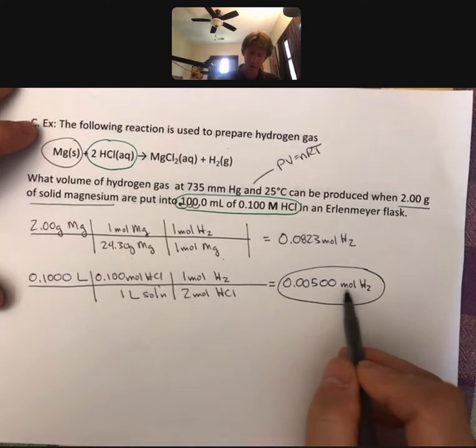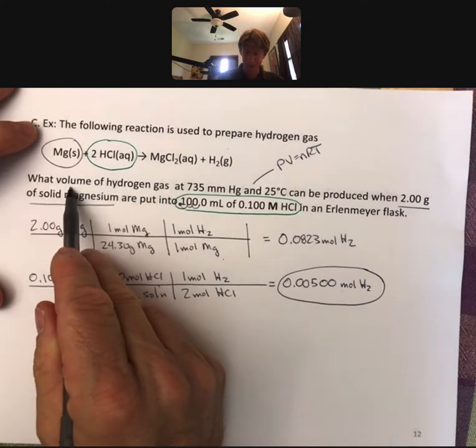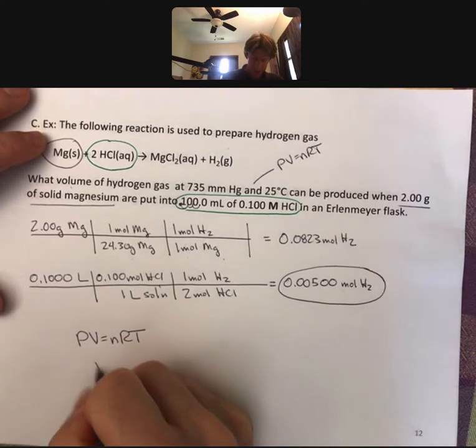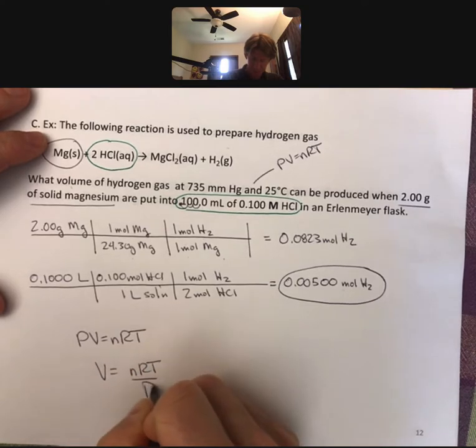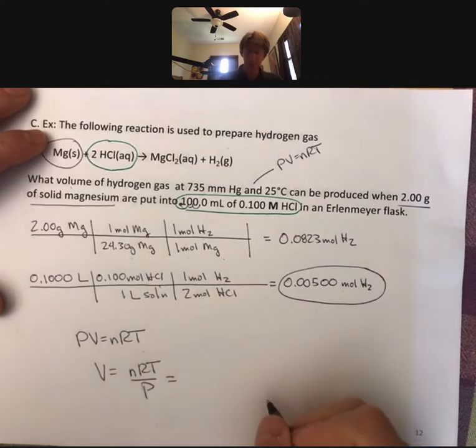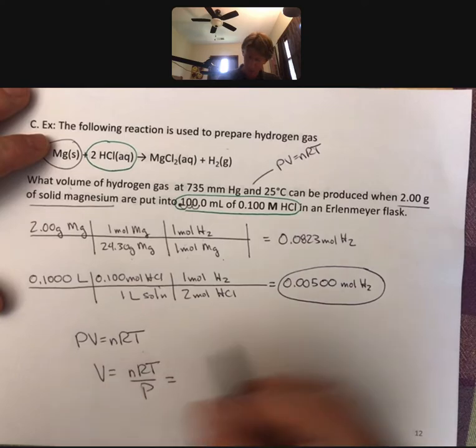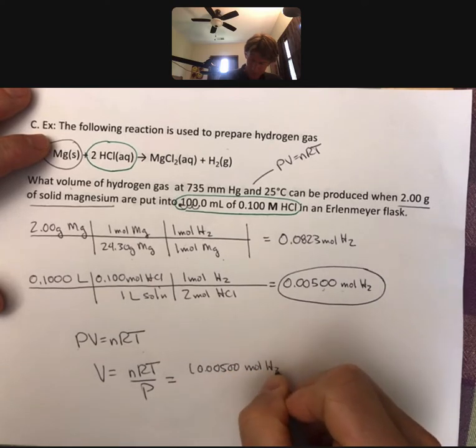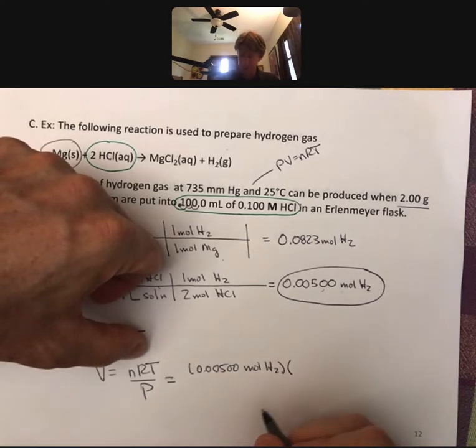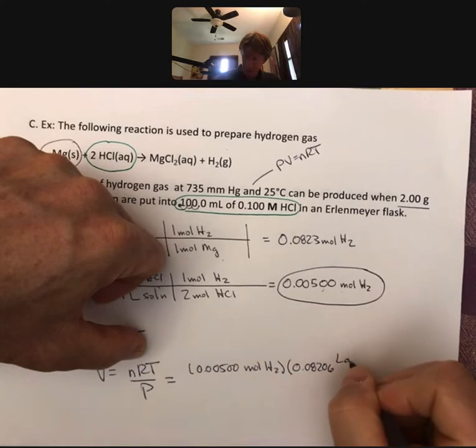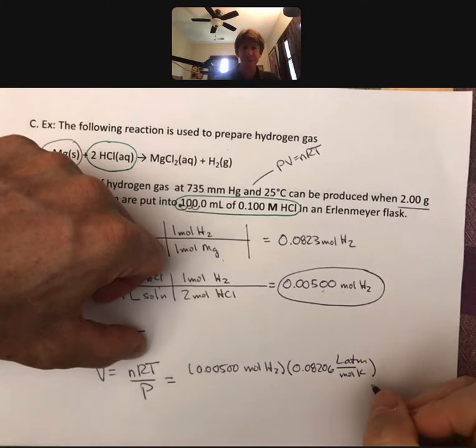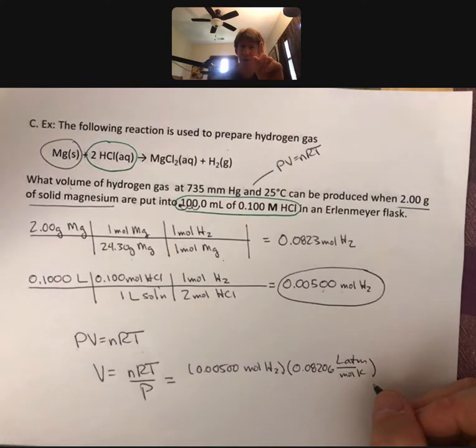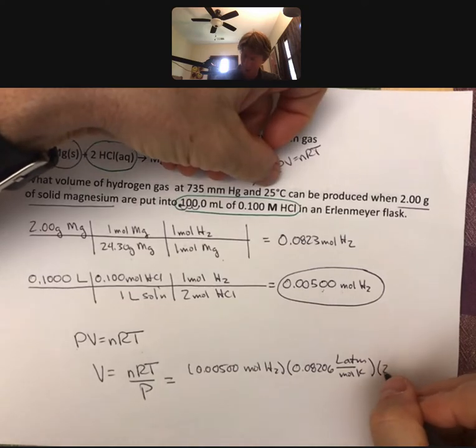For a gas we can use the ideal gas law: PV equals nRT. We want to solve that for volume. So we'll divide both sides by P. And now we're going to plug things in until we get that volume. Moles is going to be our smaller moles here: 0.00500. R, which is on our conversion and equation sheets, is 0.08206 liter atmospheres per mole kelvin. T is 25 degrees Celsius, but for gas and pretty much all calculations, we're going to do kelvin: 273 plus 25 is 298 kelvin.